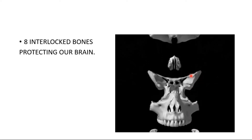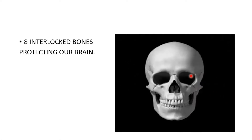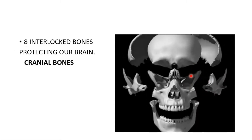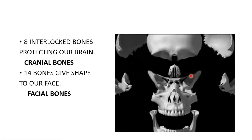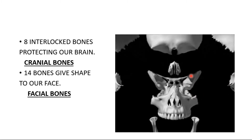Out of 22 bones, 8 bones are interlocked. You can see in the picture the bones are interlocked. These interlocked bones protect our brain, and hence they are called cranial bones. The remaining 14 bones give shape to our face, and they are called facial bones.